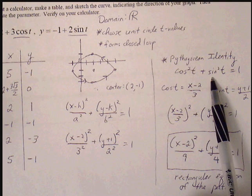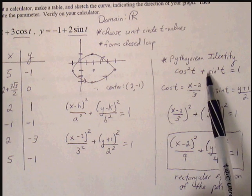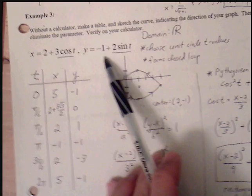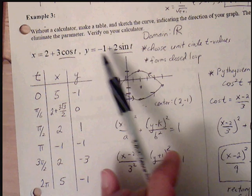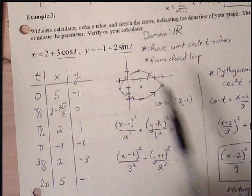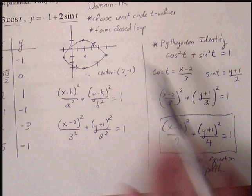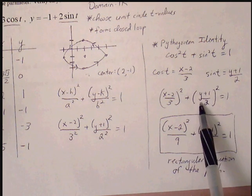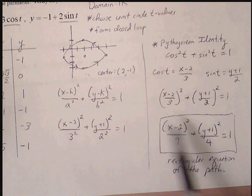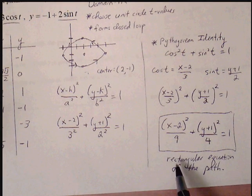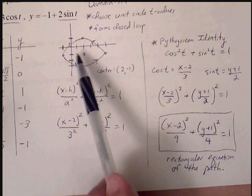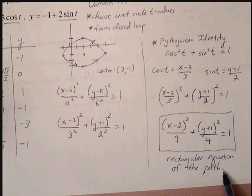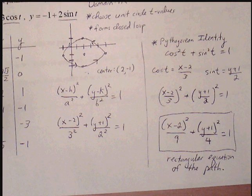Now, we do have something available to us that will help things to work out easier. We have our Pythagorean identity. Cosine squared plus sine squared is equal to 1. Well, if we solve for cosine in our original equation, we get x minus 2 over 3. If we solve for sine, we get y plus 1 over 2. And if we have that, then we can simply replace cosine and sine in terms of x and y. And once we have that, we can square both sides and see that eventually it will match the equation that we gathered from what we know about these ellipses. So here, this will provide us the rectangular equation of the path of this graph.